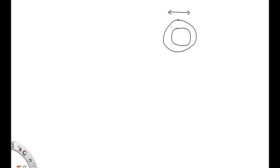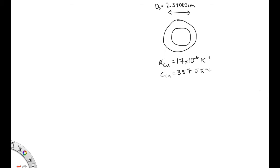In this question, we have a copper ring. The diameter of the copper ring, let's call it d0 for the initial diameter, is equal to 2.5400 centimeters. The thermal expansion coefficient for copper is equal to 17 times 10 to the minus 6 per Kelvin. The specific heat for copper is equal to 387 joules per Kelvin per kilogram. And we've got 20.0 grams of copper, which is initially at 0 degrees C.